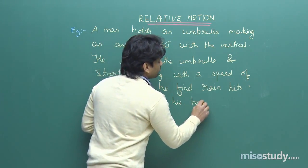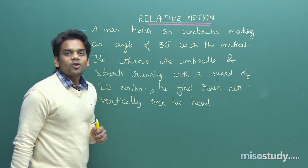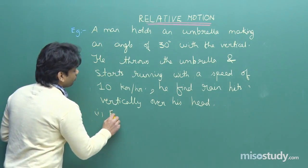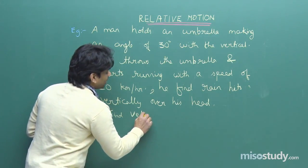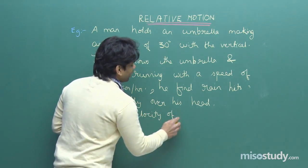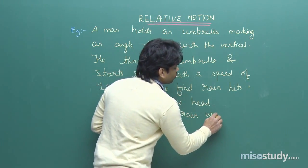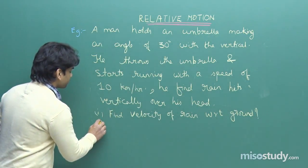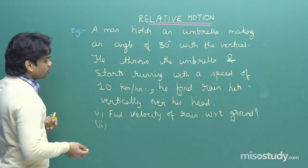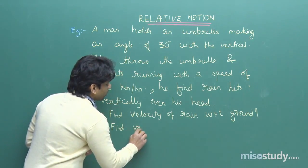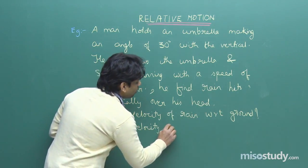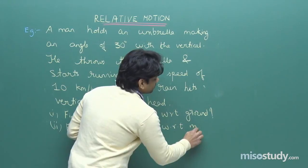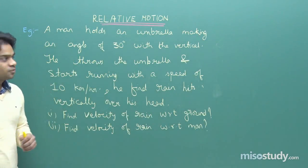The questions are: first, find the velocity of rain with respect to the ground; and second, find the velocity of rain with respect to the man.